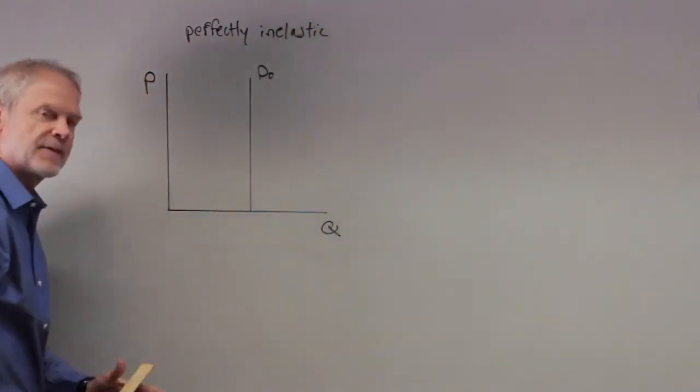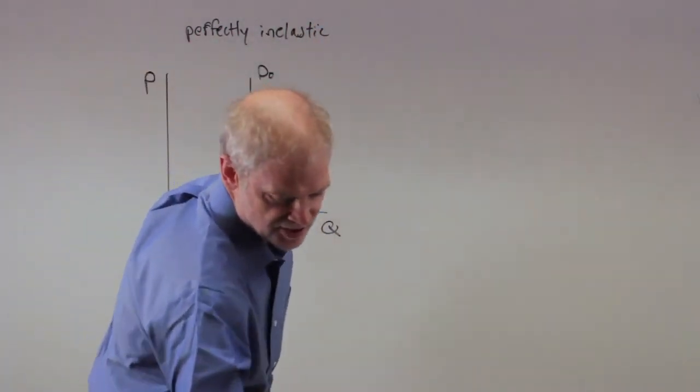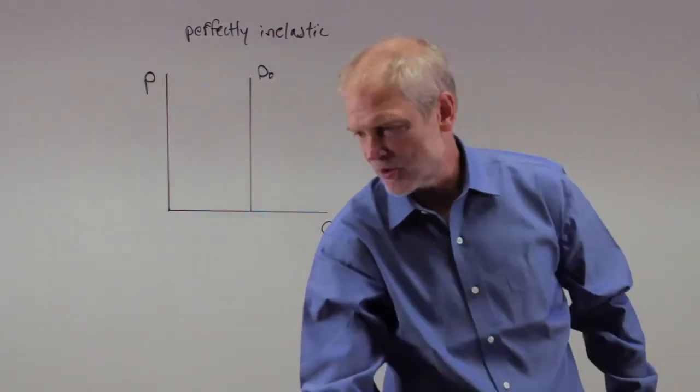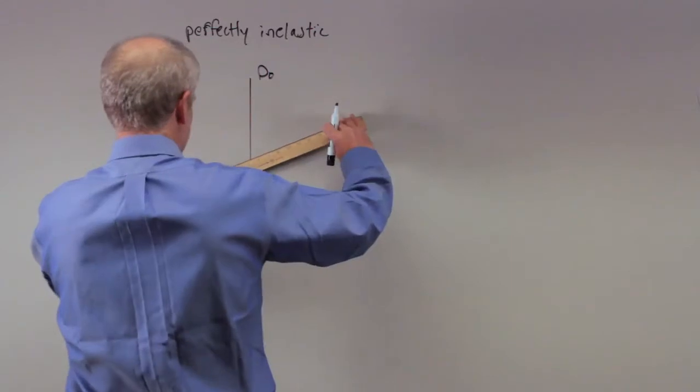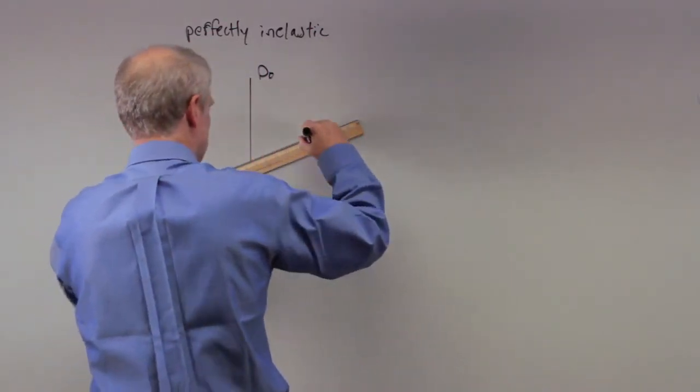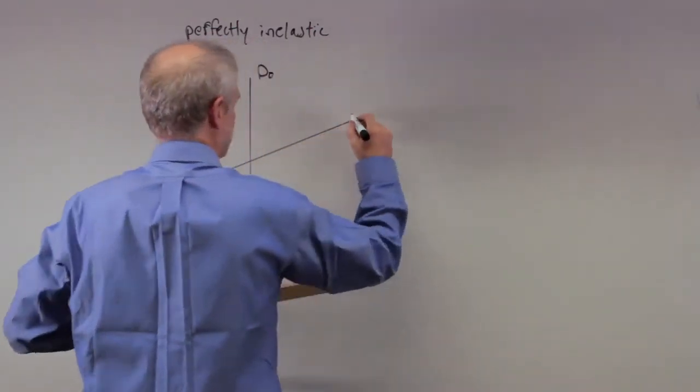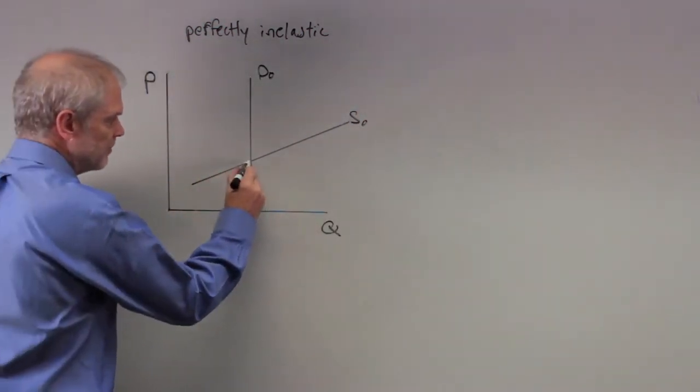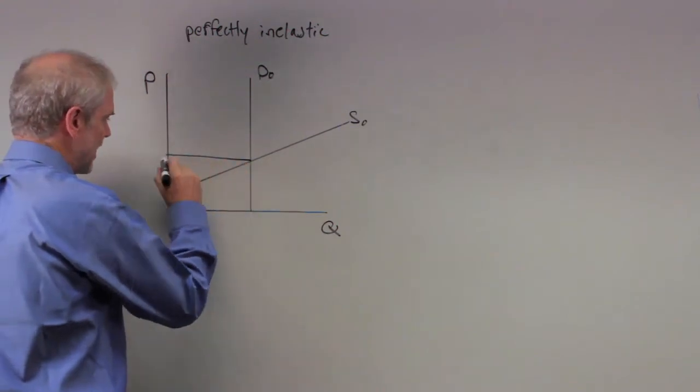And now they're saying to you if that's the case and the supply of the good in question decreases, so let's draw a supply. It doesn't really matter how elastic I make it in this particular case. Here's S0. So this is our equilibrium prior to this change in supply, here's the price, here's the quantity.